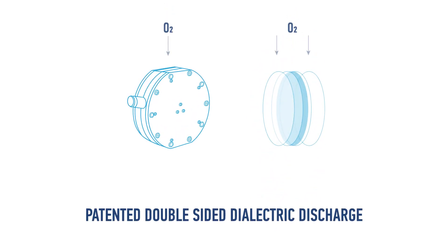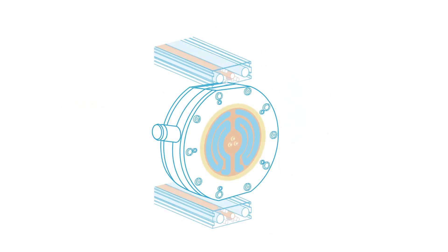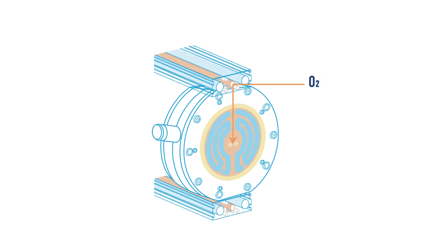The compact size and unique design tame the powerful dielectric barrier discharge production method. Due to the smart shape of the unit, oxygen travels a shorter distance, enabling more efficient conversion of gas.